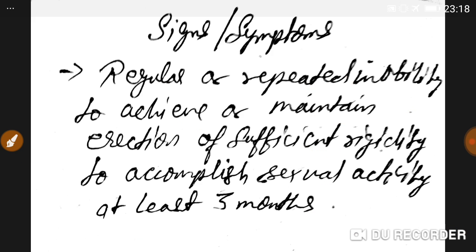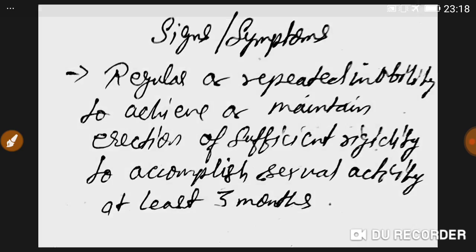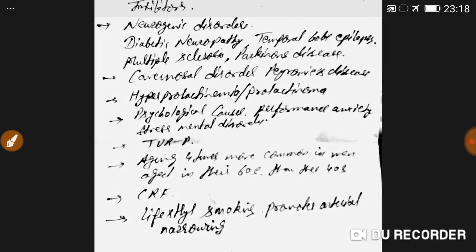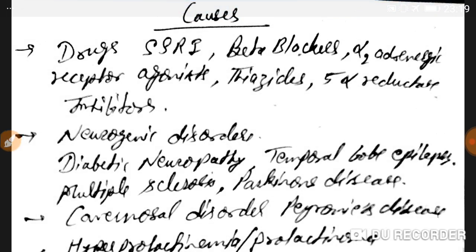There are two categories: first, a male who has never achieved an erection in his life; and second, a male who previously achieved erections but after a year or two developed erectile dysfunction. These are two different cases. Now let's discuss the causes.